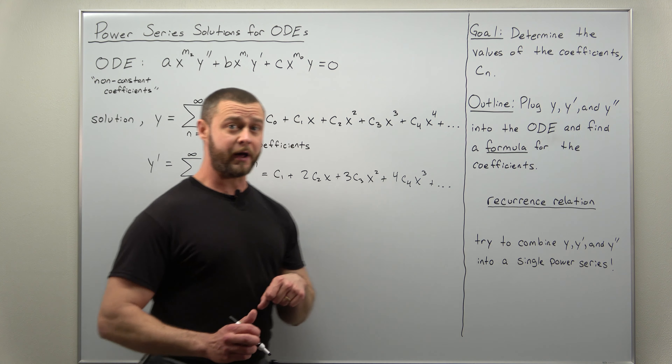We've achieved our goal: we assumed a power series for Y and came up with power series representations for Y prime and Y double prime. Now let's get to the tips and tricks of how we take all three of these power series, plug them in, and combine them into a single power series to give us the formula for the coefficients — the recurrence relation. Now that we can find power series representations for Y prime and Y double prime, we're ready to get to the tips and tricks. The first tip or trick is actually quite simple — it goes back to your Calculus 2 course when you first learned about power series and infinite series.